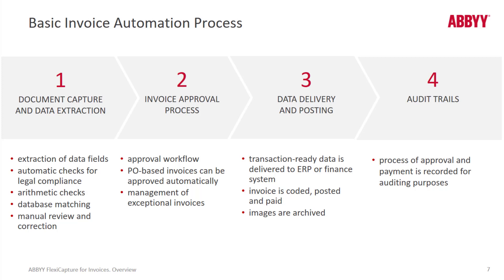Then the invoice approval process, where the decision is made whether the invoice should be paid. If the invoice was issued against a purchase order, the approval workflow starts with matching against the PO. Invoices that match the corresponding PO do not require human approval. This stage also includes logic for the management of exceptional invoices. Then data delivery and posting — transaction-ready data is delivered to the ERP or finance system where the invoice is coded, posted, and paid. Invoice images can additionally be delivered to a records management or archival system for archiving.